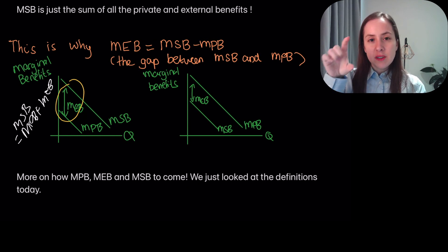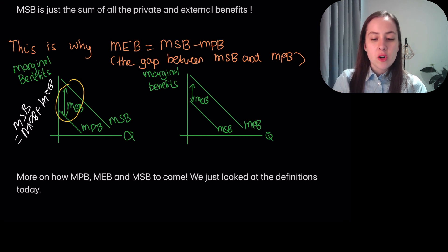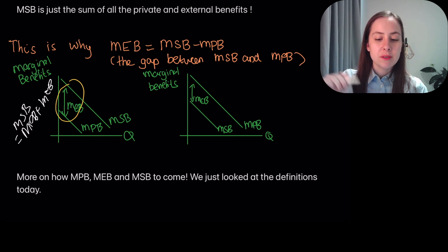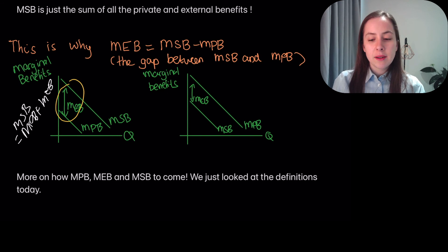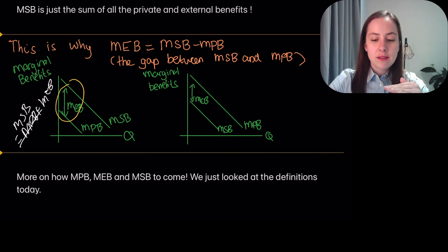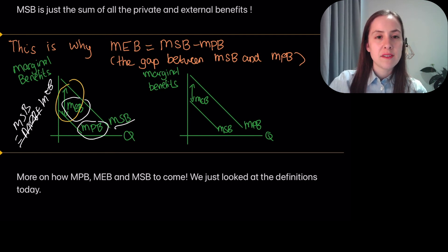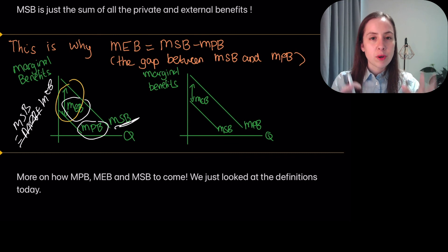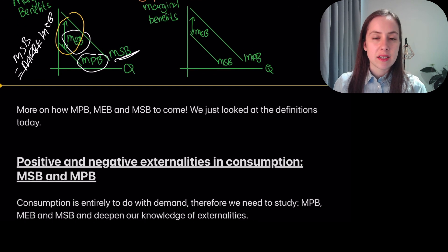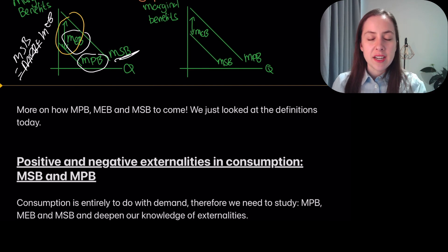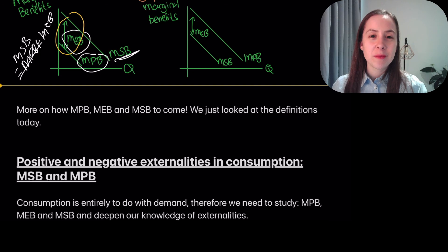This explains the graph — specifically why the MEB is the gap between the MSB and the MPB. Remember: MSB equals MPB plus MEB. The next video goes into positive and negative externalities in consumption, so take a look at the link below and click on that next video to learn more. Hope that was enjoyable — thank you, bye!